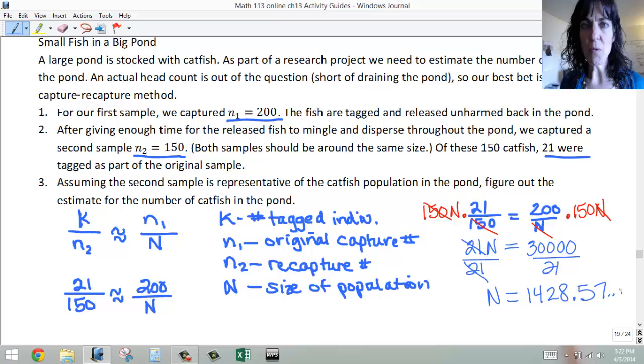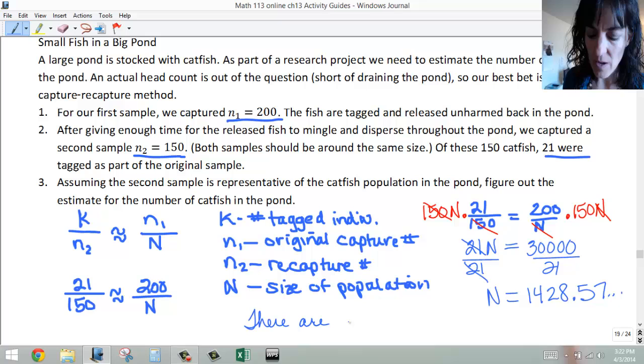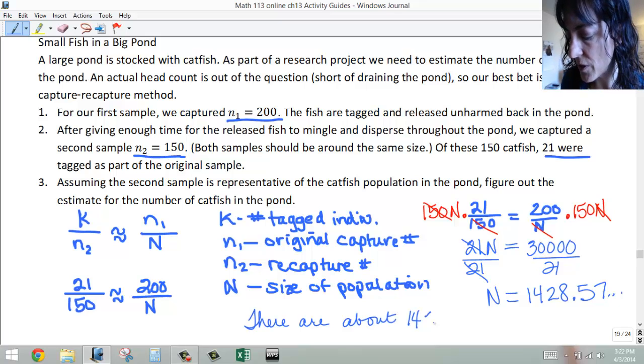And remember, we're talking about fish, and we can't have a piece of a fish unless we're having a fish fry. And so we would have to say there are about 1429 fish in the pond.